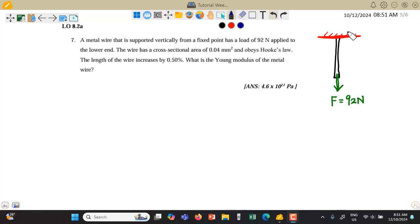Question 7. We are given a metal wire which is supported vertically from a fixed point. Force of 92 N is applied at the lower end of the wire.